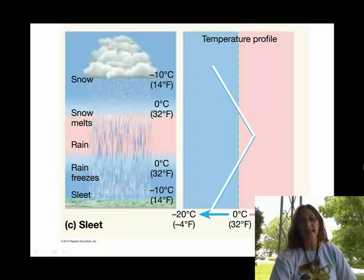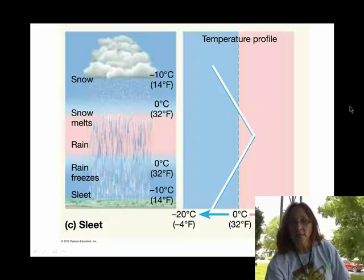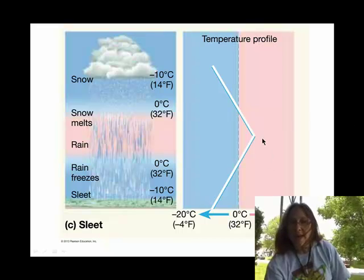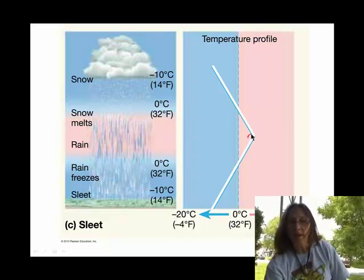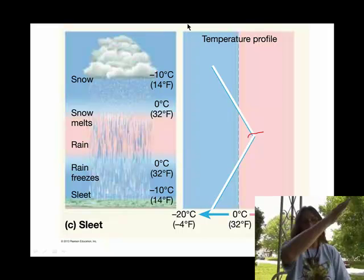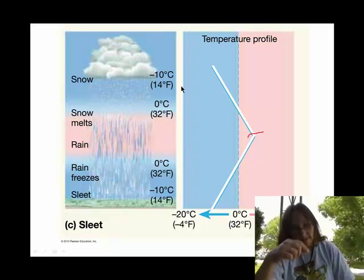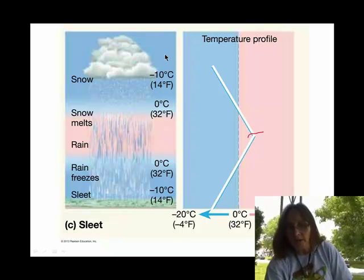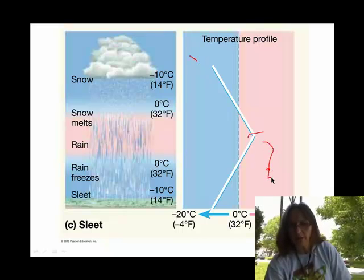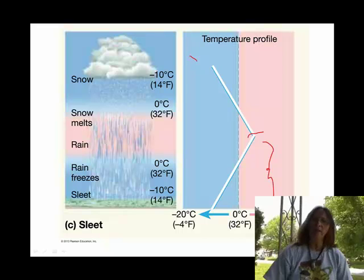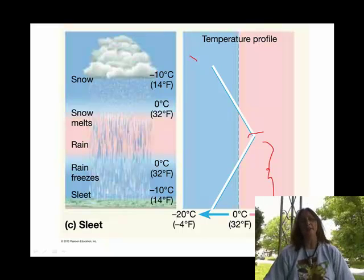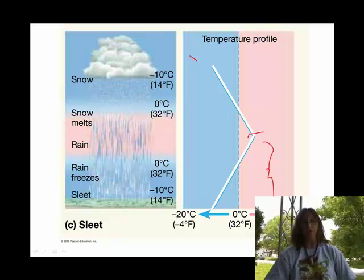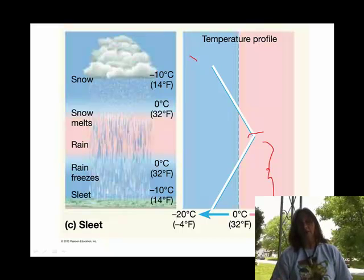This last part, after the kink, this is normal, right? Temperature's getting colder as you go up. Down here, this part down here is what we call a temperature inversion. And it can happen a number of different ways. But basically, what they're saying is that there is a pocket of air near the earth's surface that is relatively cool.